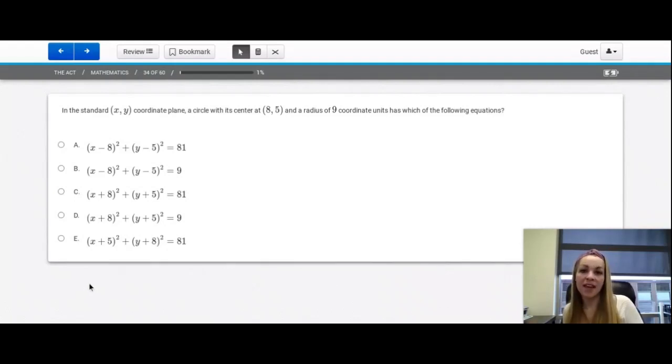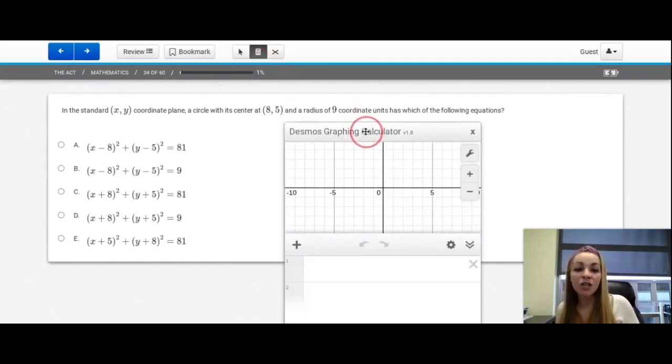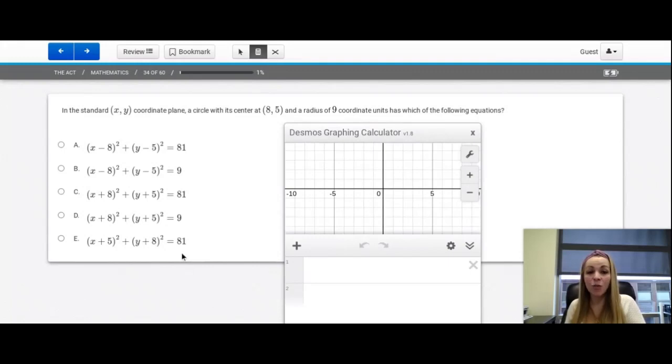What if I don't remember this on the ACT? This is where Desmos can come to the rescue. I can come here and I can just start typing these equations in and seeing which one has a center at (8, 5) and a radius of 9. So maybe you just want to start from the top and come down.